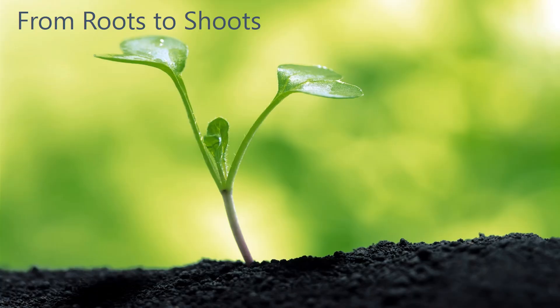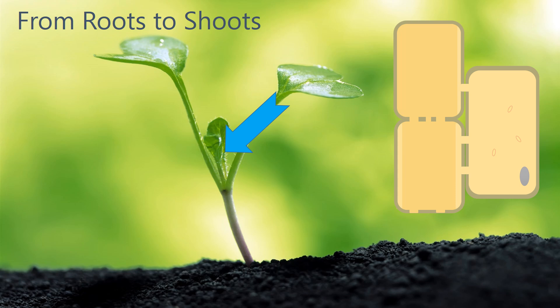As well as the xylem, the other main transport vessel in a plant is the phloem. The phloem transports dissolved sugars from the leaves to the rest of the plant for immediate use or storage.